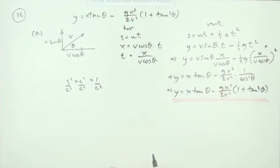So the second mark was for rearranging that to carry out the substitution and the third mark was just for simplifying it to get this result.